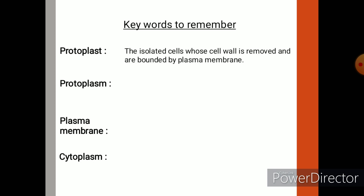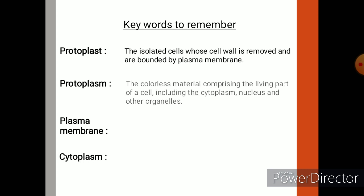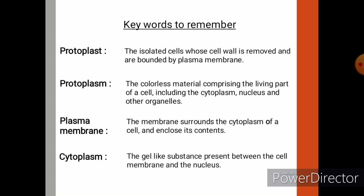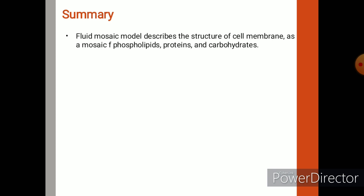Let us recall today's topic about protoplasts. Protoplasts are naked cells. If we remove cell wall with cellular enzymes, we can get spherical shaped protoplasts. Protoplast is a colorless living material of cell that contains cytoplasm, nucleus and other cell organelles. Plasma membrane is a layer that surrounds the cytoplasm, whereas cytoplasm is a gel-like substance present between cell membrane and nucleus. The fluid mosaic model is the most widely accepted model for cell membrane.